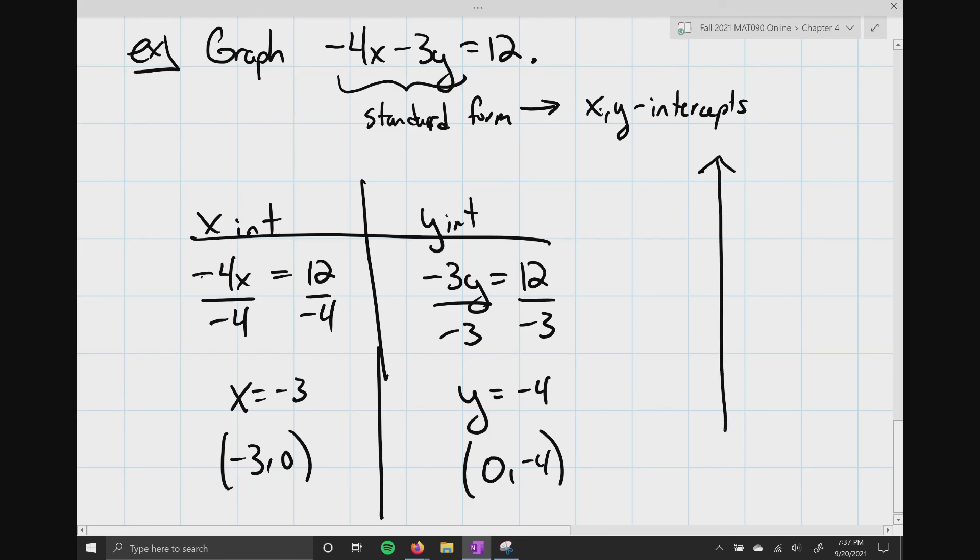Off to the right, I'll go ahead and graph this real quick. My x-intercept is negative 3 comma 0. So, that's going to be like over here. My y-intercept is going to be 0 comma negative 4. So, that's going to be somewhere down here. And then, all I have to do is as best you can connect the dots. And that's it. You're done. And I am done with this video.